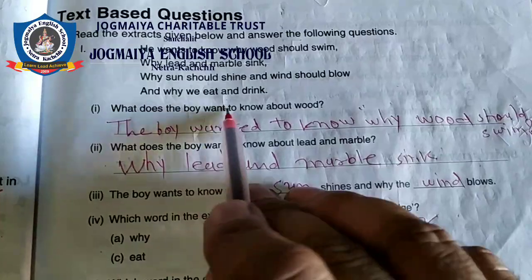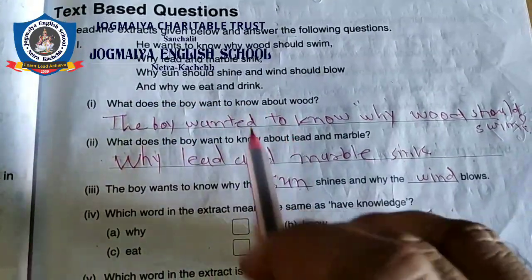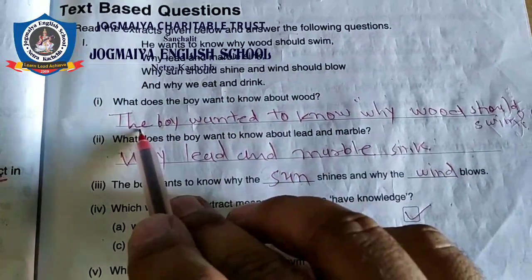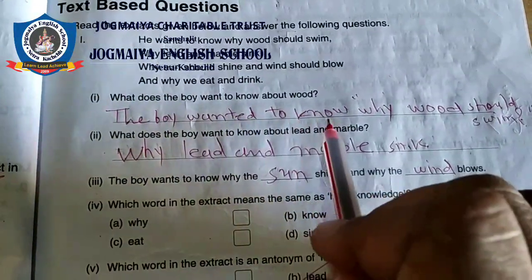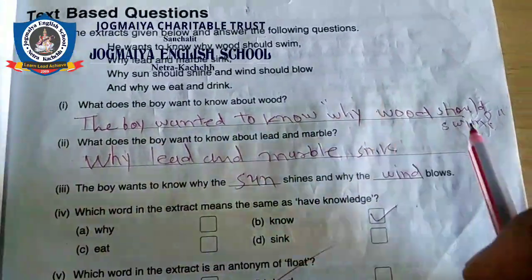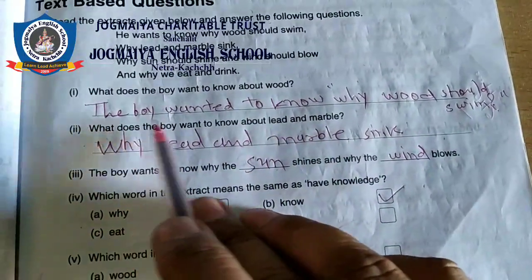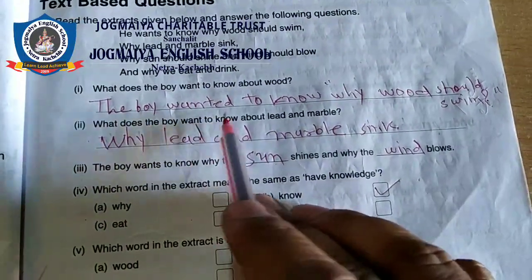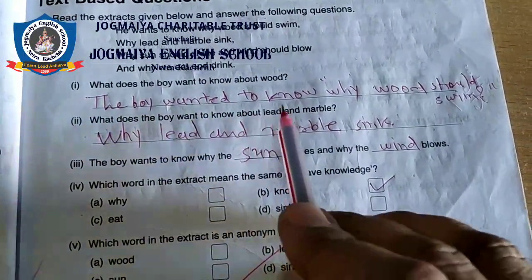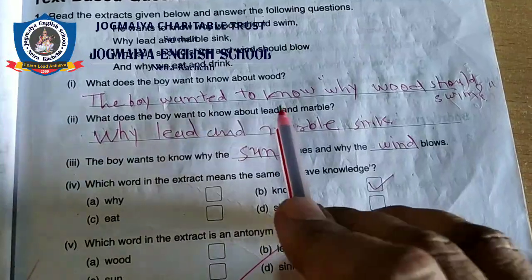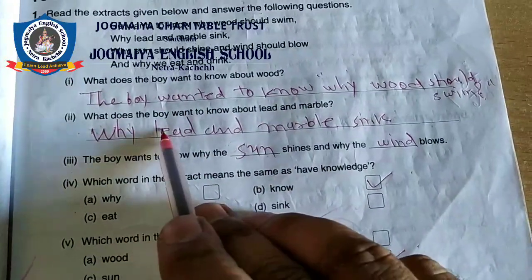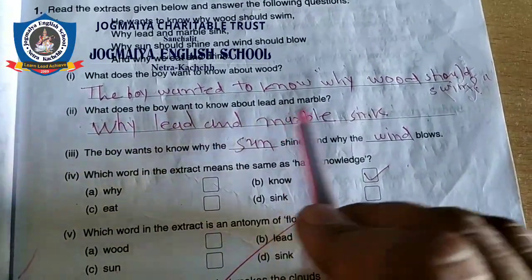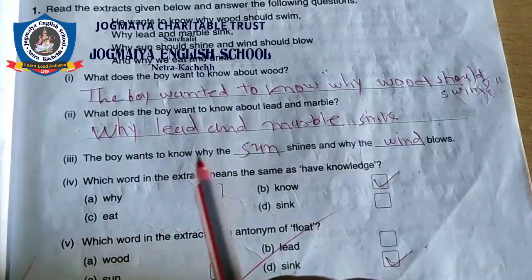Question 1: What does the boy want to know about wood? The boy wanted to know why wood should swim. Question 2: What does the boy want to know about lead and marble? Why lead and marble sink.